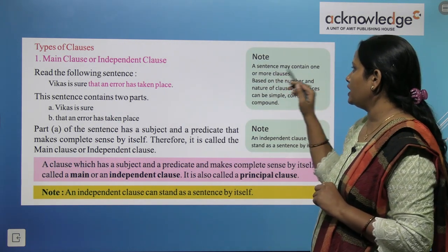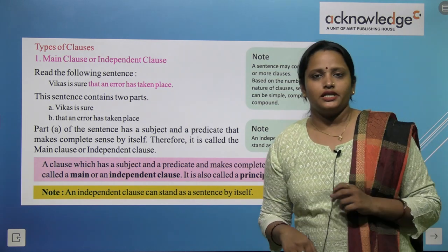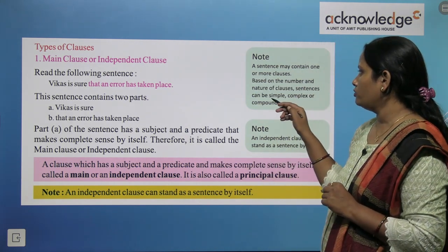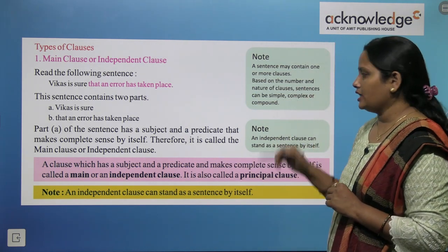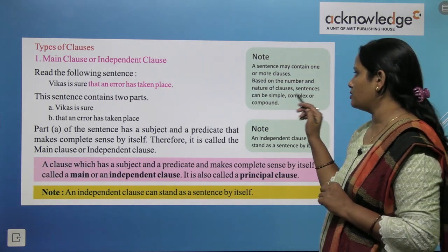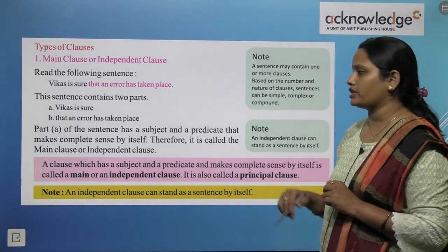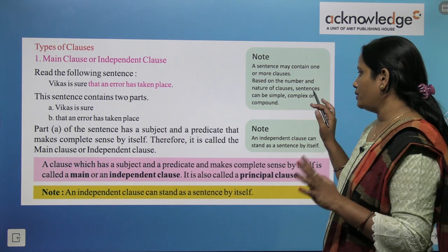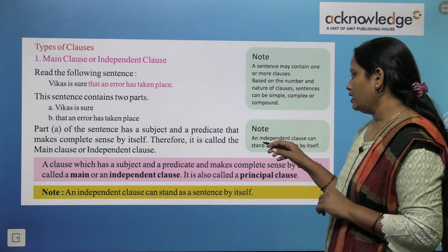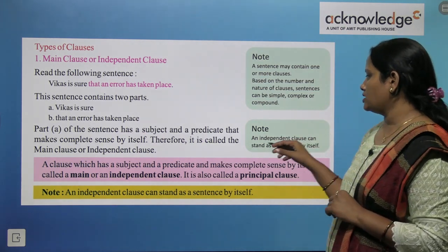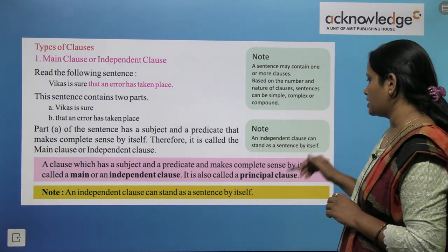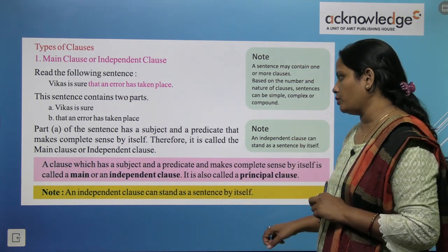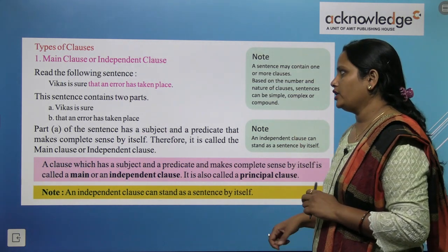A sentence may contain one or more clauses. Based on the number and nature of clauses, a sentence can be simplex, complex, or compound. An independent clause can stand as a sentence by itself — this point is noted here.